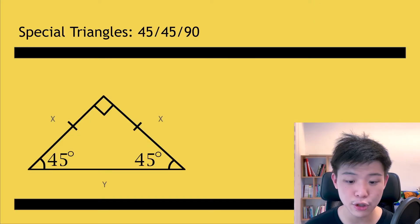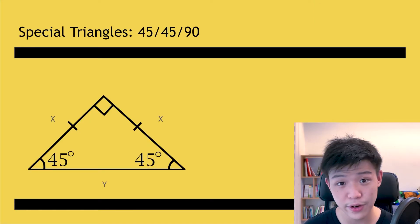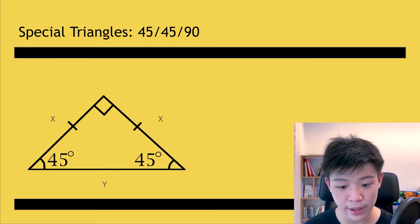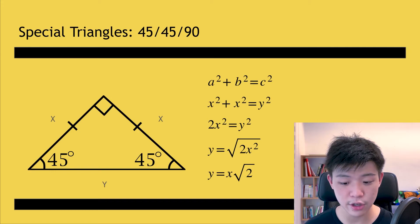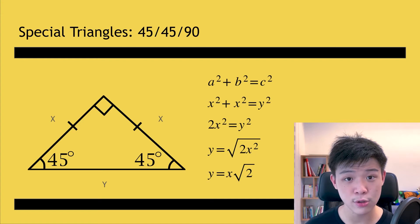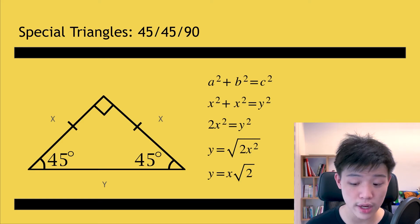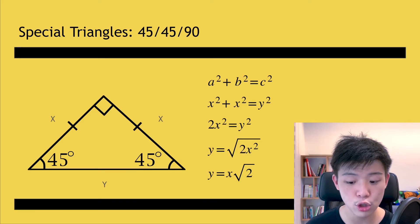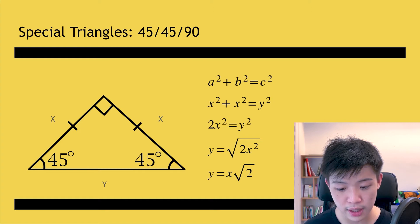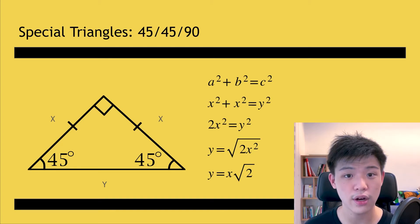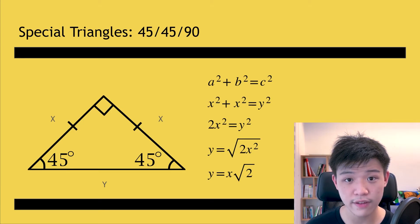Since the topic is special triangles, let's look at the 45-45-90 triangle — one right angle and two 45 degree angles. How do we figure out X and Y? The Pythagorean theorem states A squared plus B squared equals C squared. In this case, both A and B are X, so it becomes X squared plus X squared equals Y squared. Combining gives 2X squared equals Y squared. Working out the algebra, we get Y equals X root 2. This is an easy shortcut since both legs are the same length.